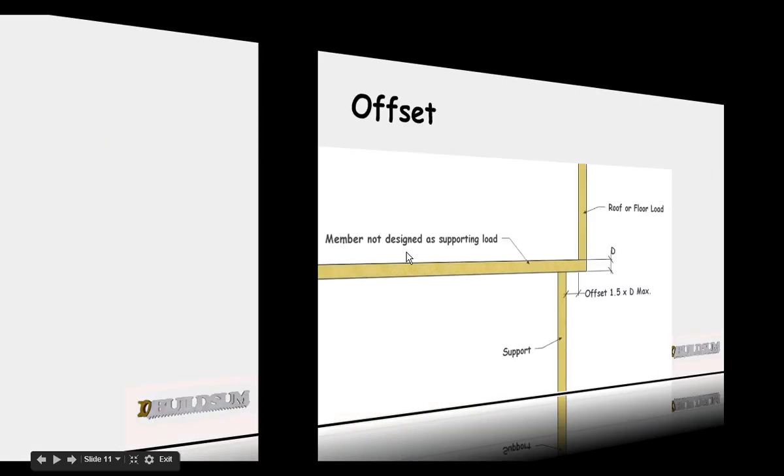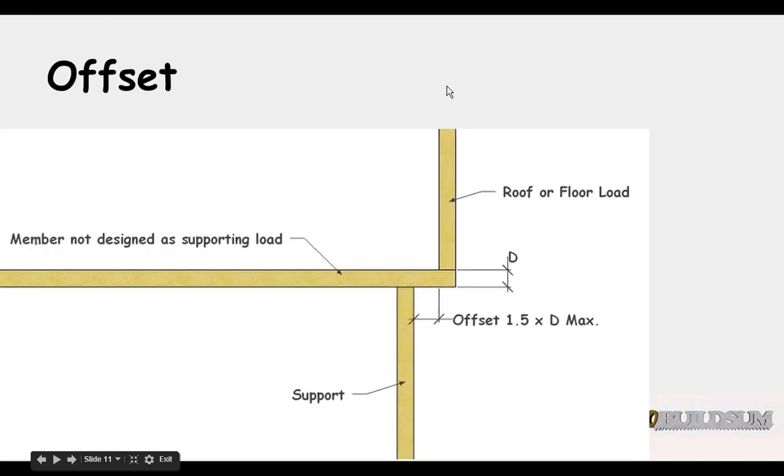And our load paths, so if we had a load coming down on this member and we wanted that load to transfer down onto that member, their offset can't be any more than one and a half times the maximum depth of this member. So that way the load would transfer through. If it's longer than that it's not going to transfer into this member.